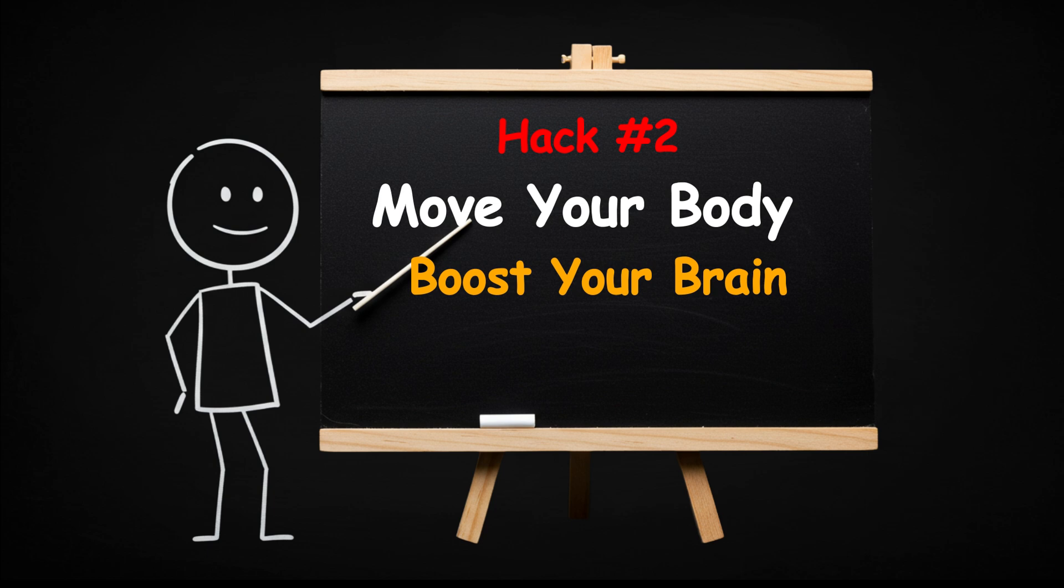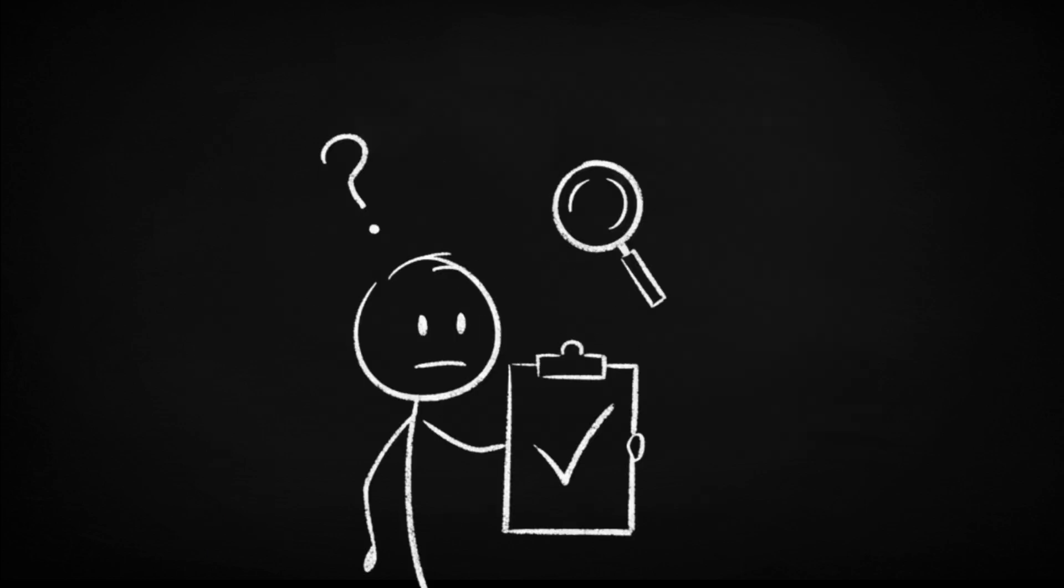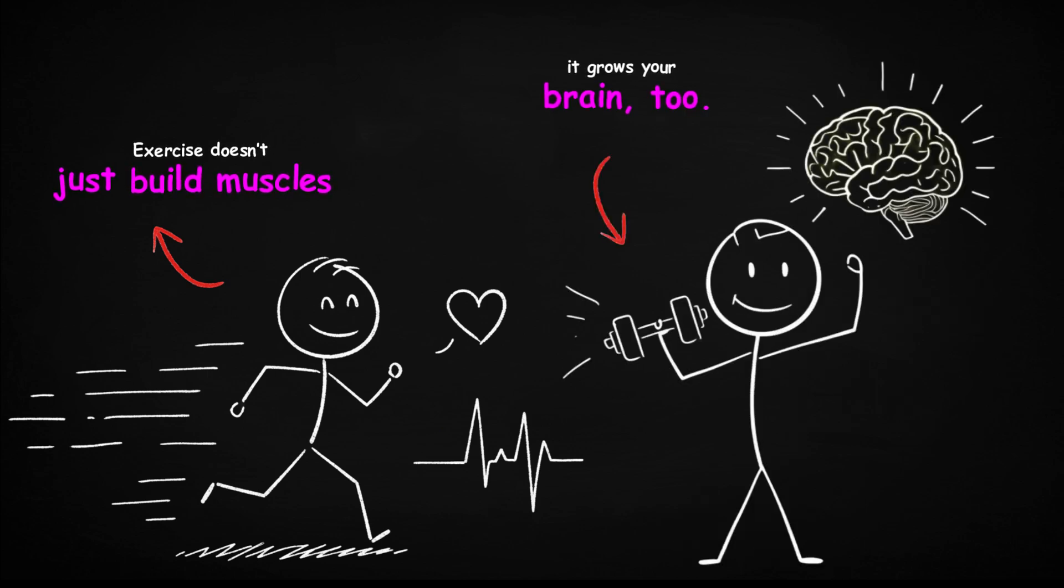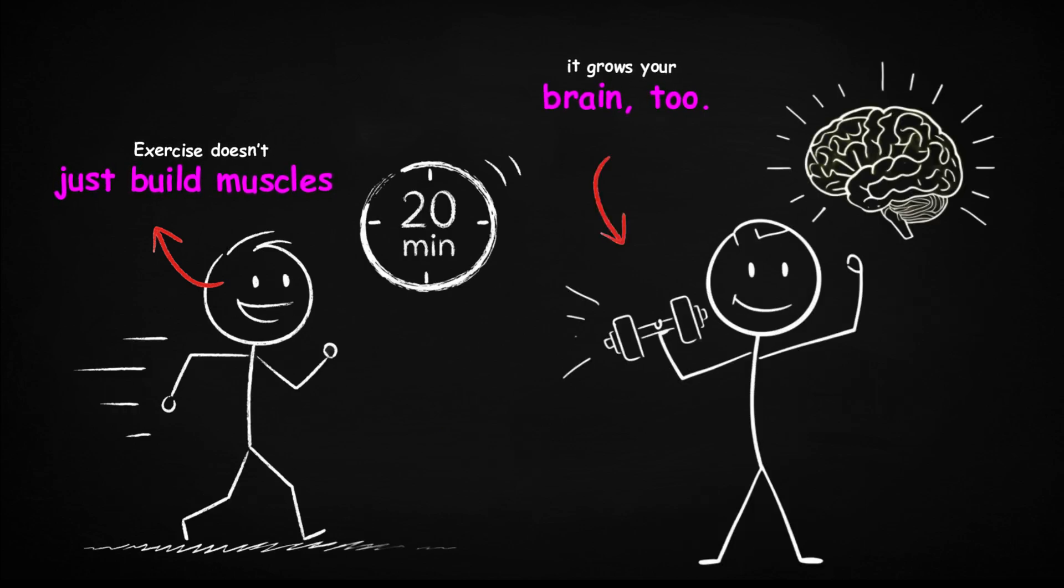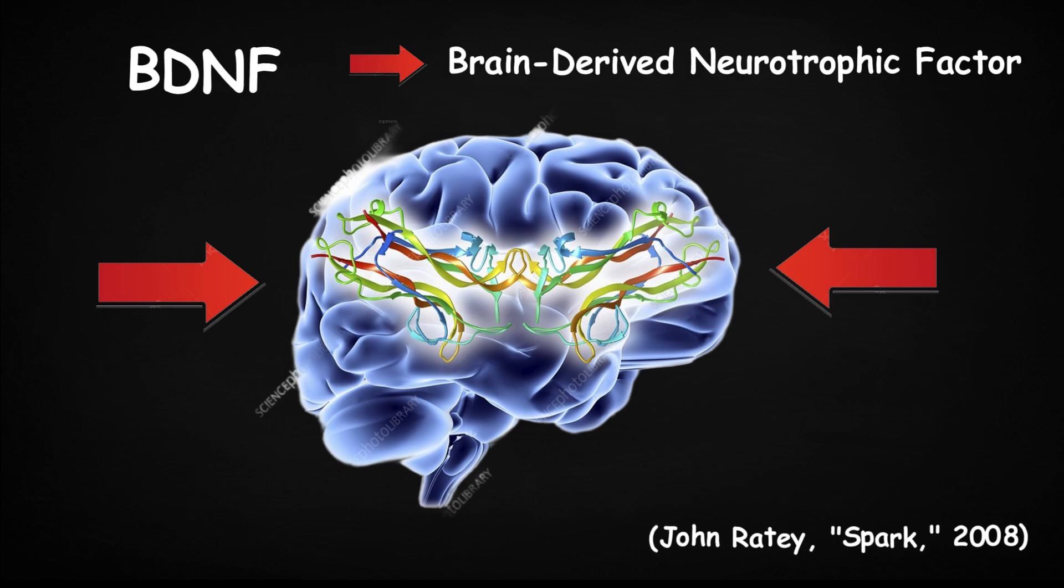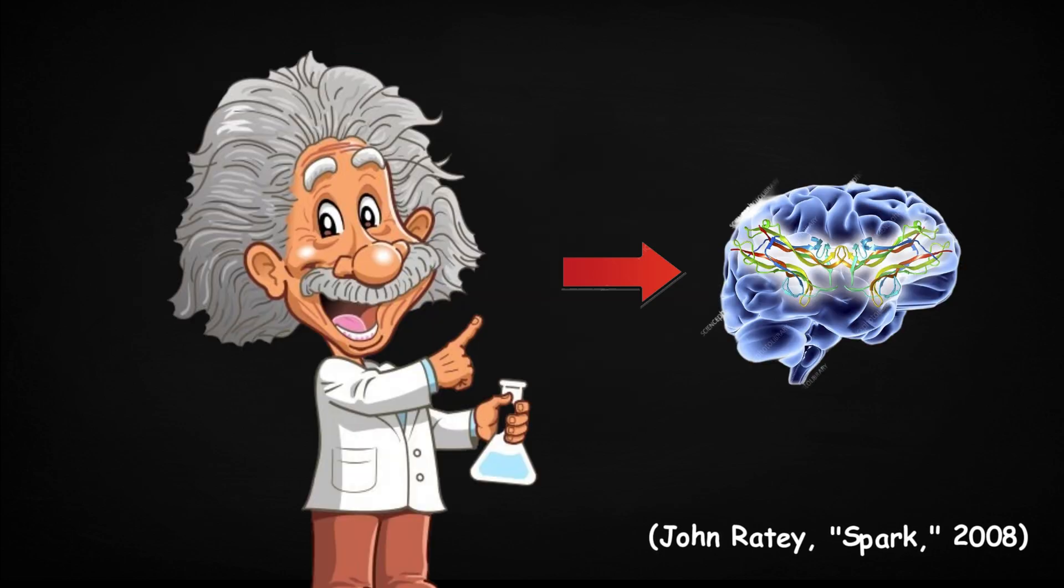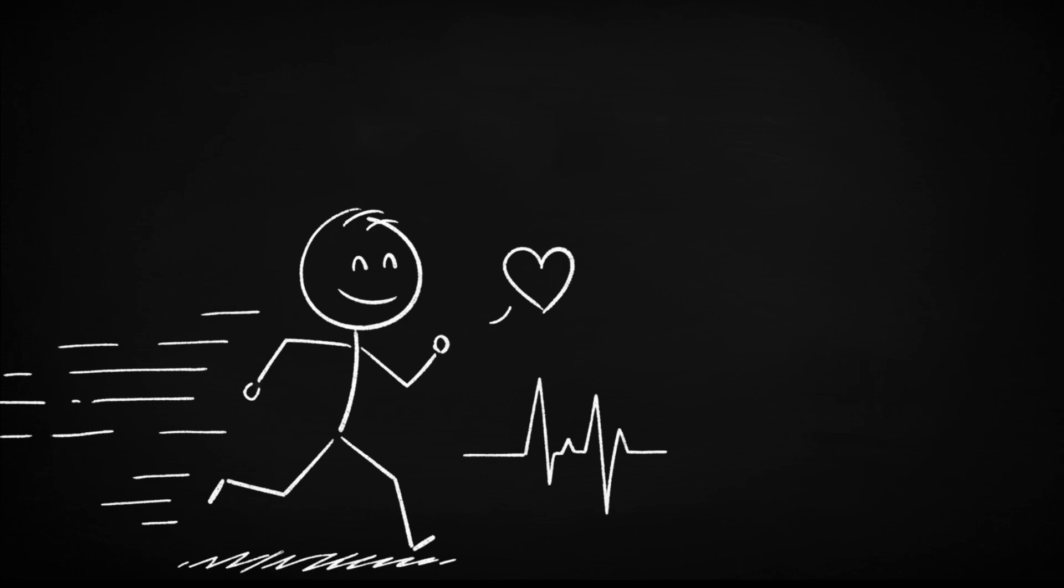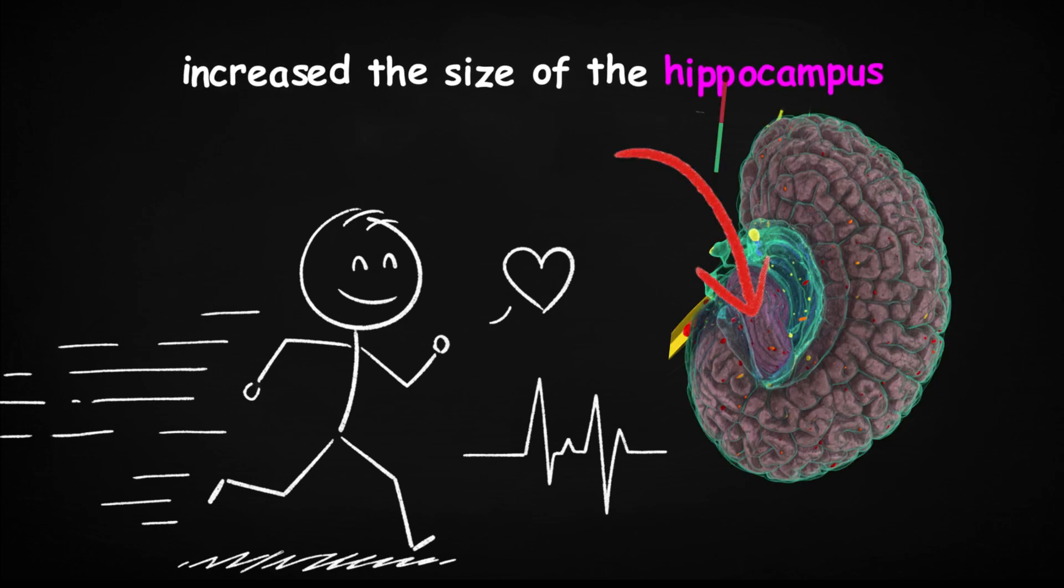Move your body, boost your brain. Here's the truth most people miss. Exercise doesn't just build muscles, it grows your brain too. Physical movement releases BDNF, brain-derived neurotrophic factor, which scientists call miracle grow for your neurons. In one study by the University of British Columbia, regular aerobic exercise increased the size of the hippocampus, the brain area linked to memory.